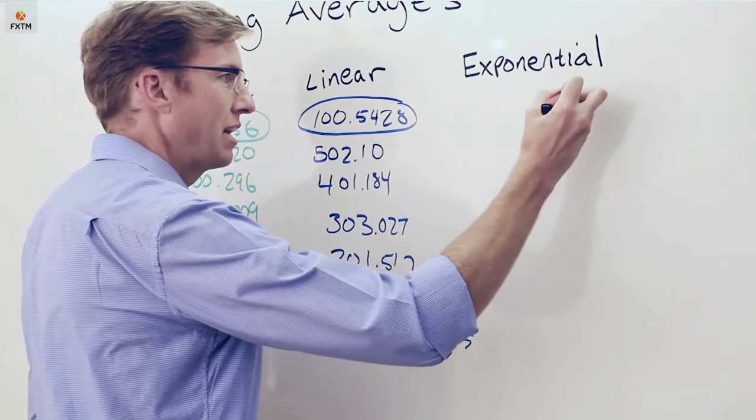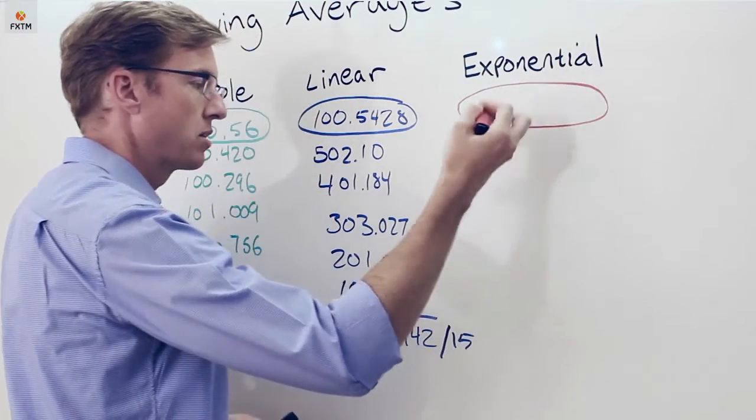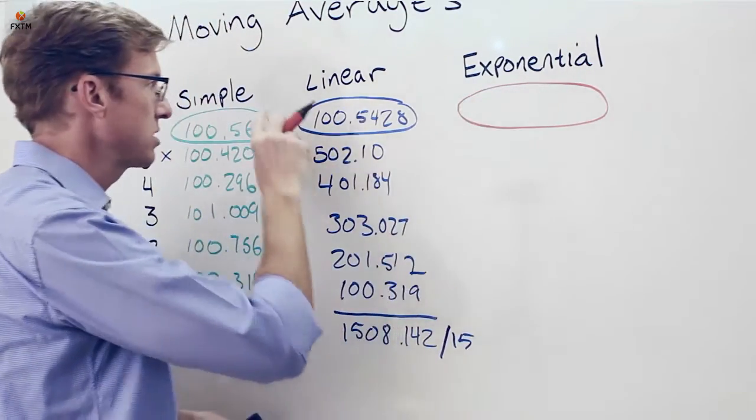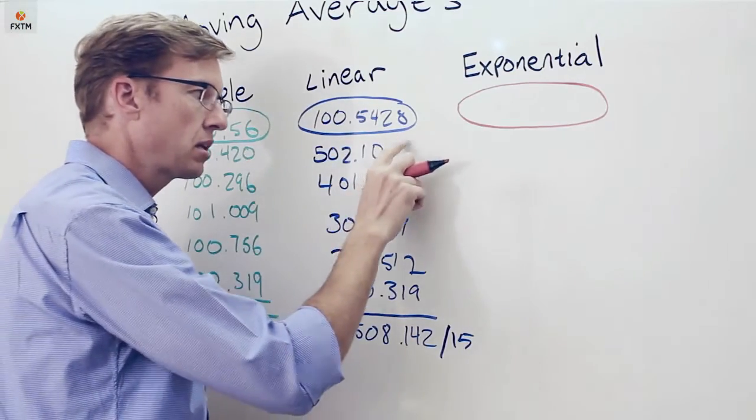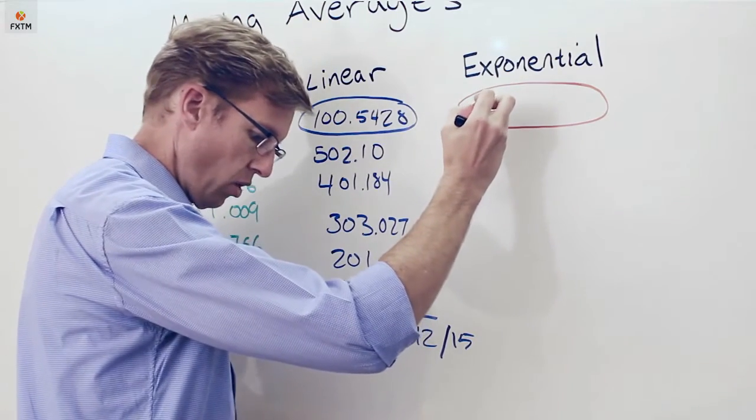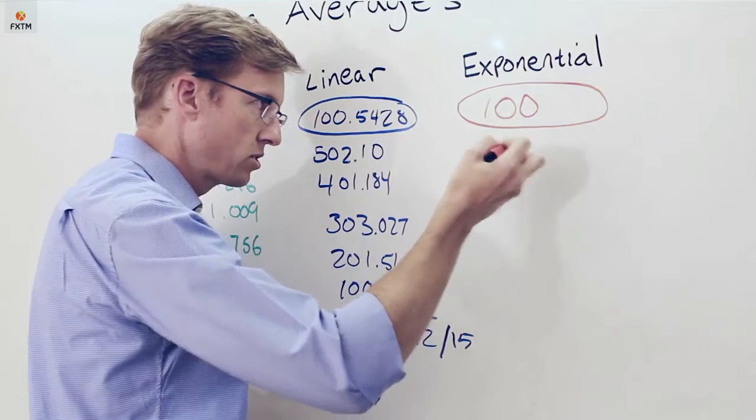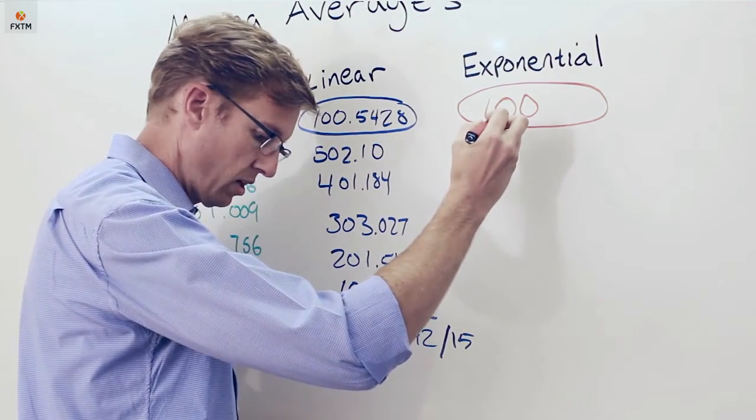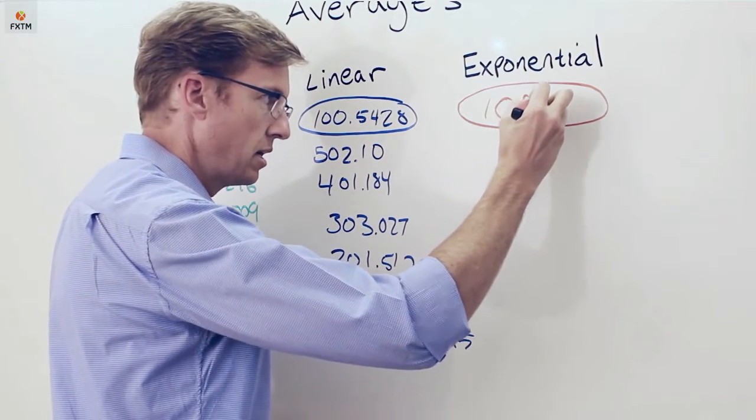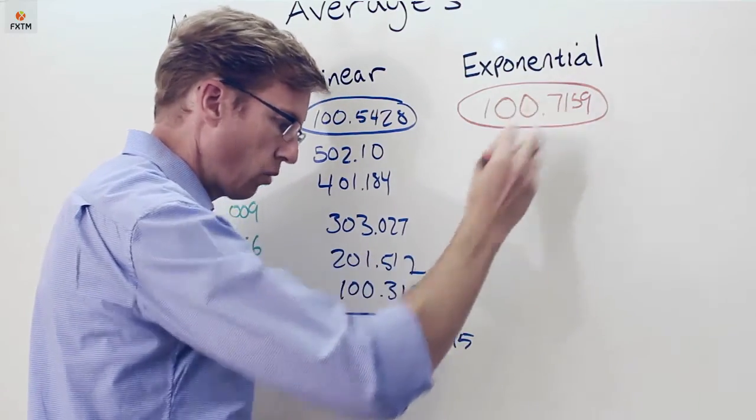The point is that we are going to get a moving average that is going to move faster for the same time period that we're using. It's going to move faster than the simple moving average, and it'll be a little different than the linear moving average. And the advantage that a lot of investors are looking for is that it includes all the possible data that's available historically. So if I were to do this calculation here, it would actually be 100.7159.